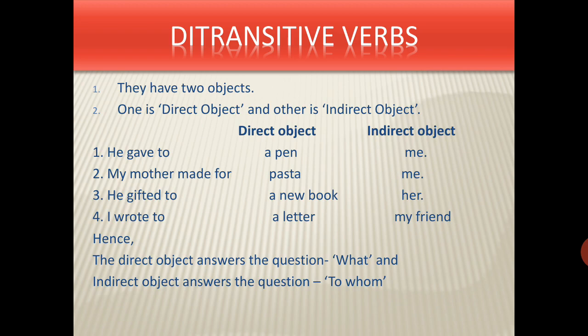One more example: 'My mother made pasta for me.' 'Made' is the verb. What has she made? Pasta — so 'pasta' is the direct object. For whom has mama made the pasta? Me — so 'me' is the indirect object. Another example: 'He gifted a new book to her.' Gifted what? A new book — direct object. Gifted to whom? To her — so 'her' is the indirect object. Direct objects answer 'what' and indirect objects answer 'to whom.'